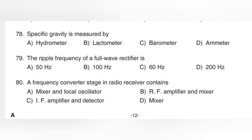The ripple frequency of a full wave rectifier: if you have a full wave rectifier, the frequency is double the input frequency — that is 2F. In a bridge rectifier, the frequency is also double. The full wave rectifier output frequency is doubled.